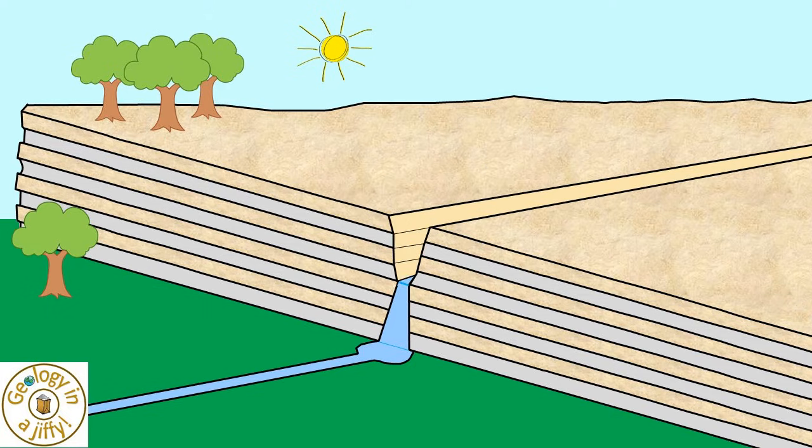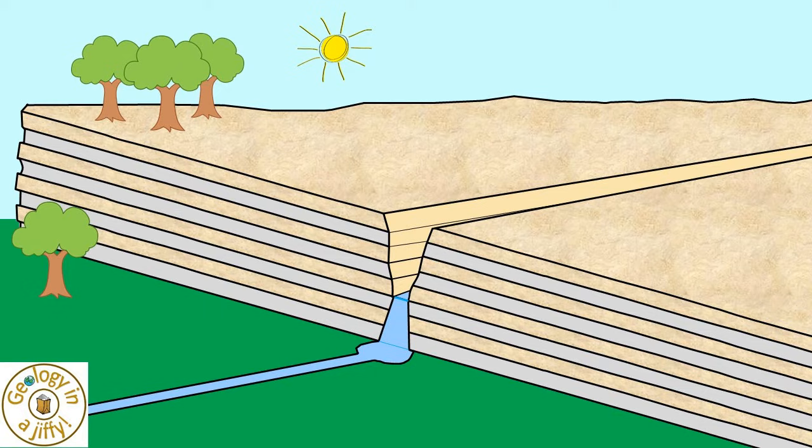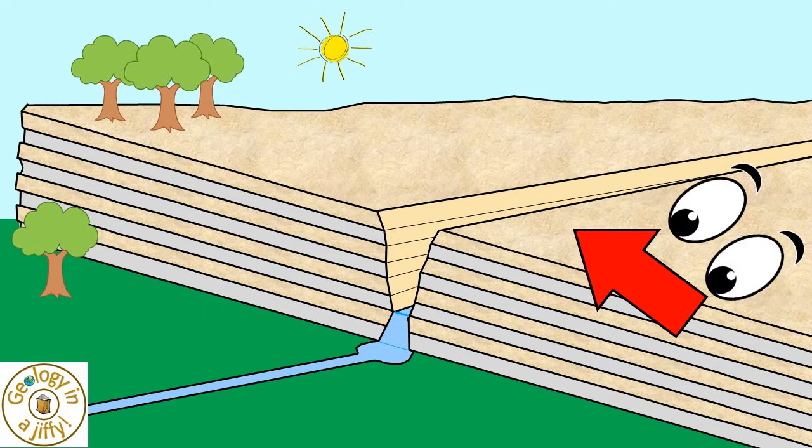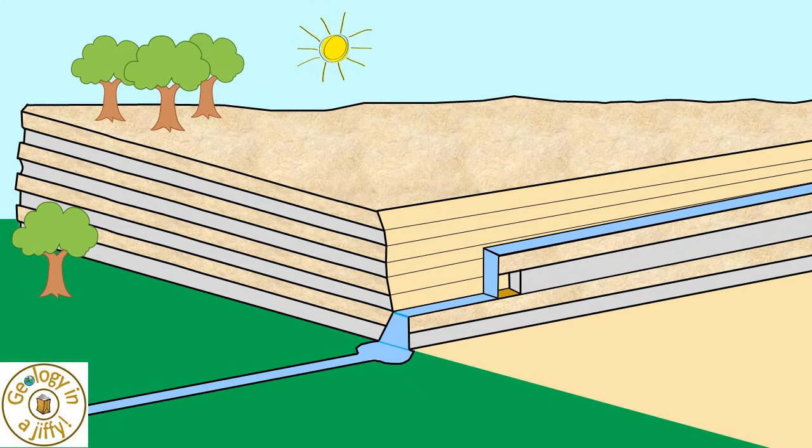This continues, with the river carving an ever deeper gorge, down and into the plateau. If we look at the gorge horizontally from the side, we can see the waterfall receding backwards, away from the cliff face, continuing eroding further into the plateau.